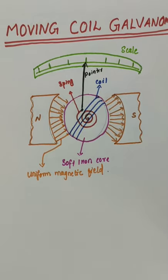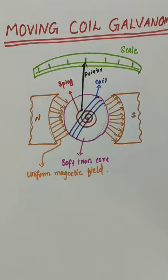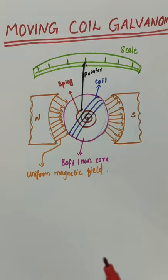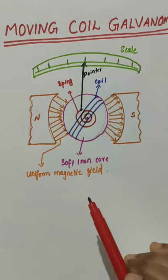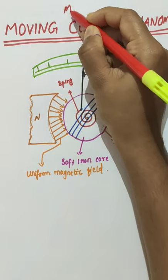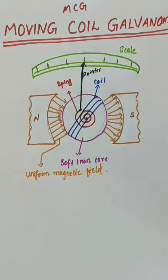We have already discussed about electric currents in electrical circuits, voltages in circuits, etc., in the third chapter — current electricity. Now, to measure the electric current in the circuit or voltage drop across the resistor, we can make use of a moving coil galvanometer, or MCG.